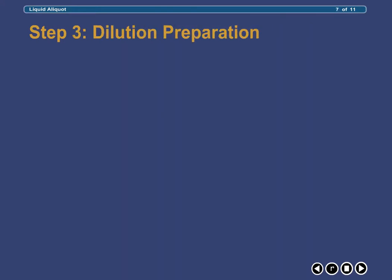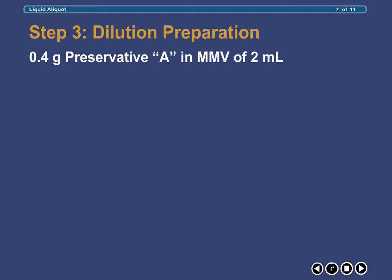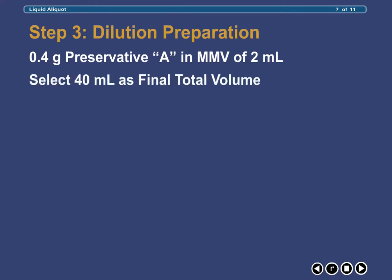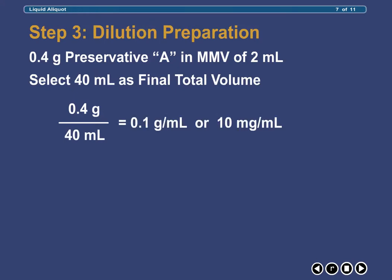Based on the quantity of Preservative A in our minimum measurable volume calculated in the previous step, we now select a convenient final volume of solution to be used in preparing the dilution. Here, we select 40 milliliters. Doing so, the concentration of our dilution, once it is prepared, will be 10 milligrams per milliliter.